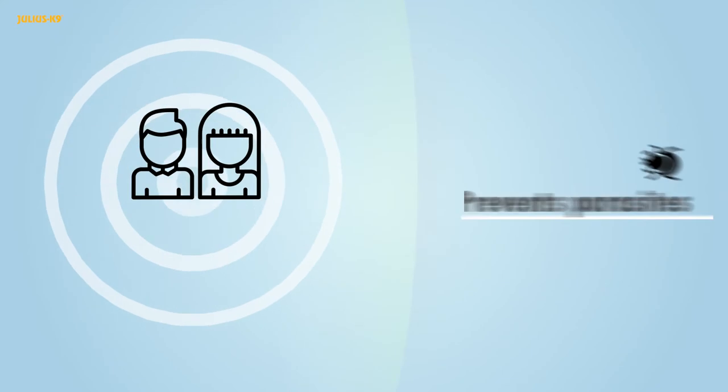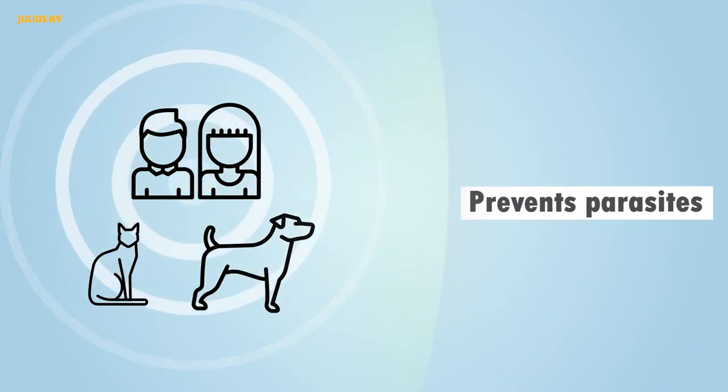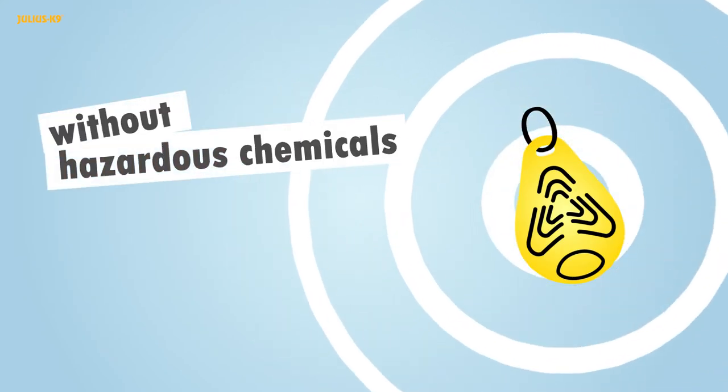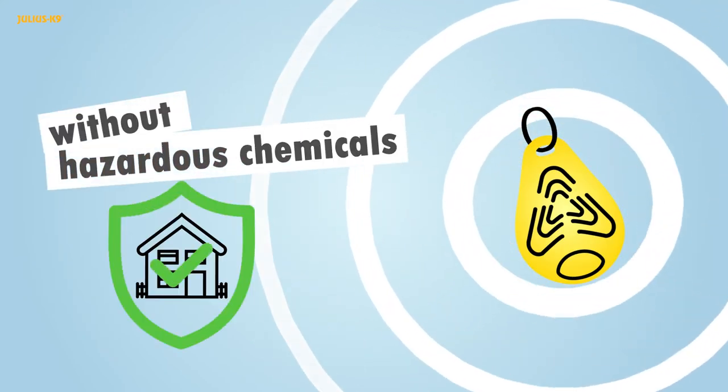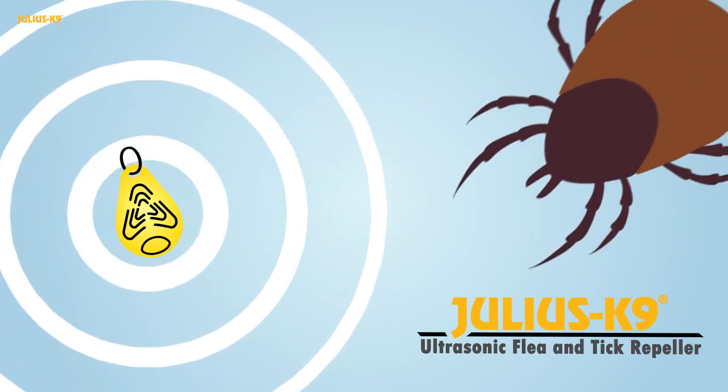The ultrasound prevents these parasites from locating and attaching to people, dogs, and cats. The device operates without hazardous chemicals, so it can be used safely on animals in the home. The Julius K9 ultrasonic flea and tick repeller reduces the risk of pets bringing parasites into your home.